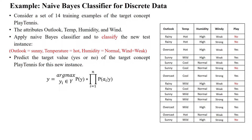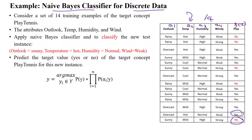This example explains the Naïve Bayes classifier for discrete data. This dataset has 14 samples with four attributes — feature one, feature two, feature three, feature four. The target function has two different values: 'No' and 'Yes'.